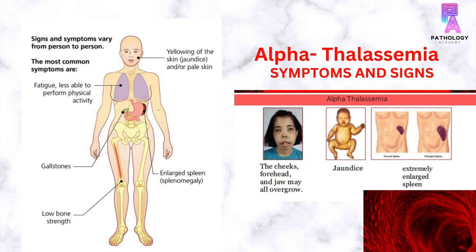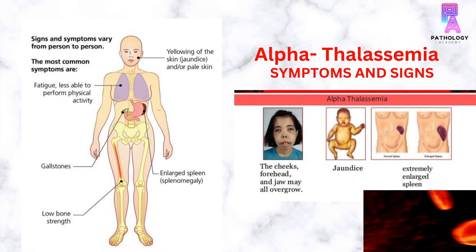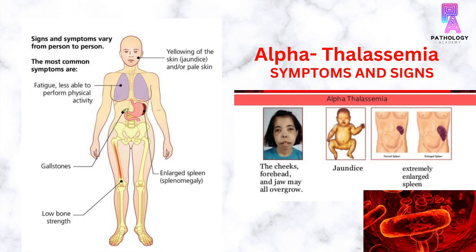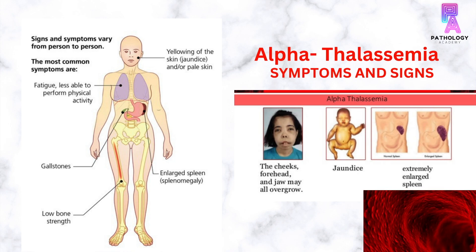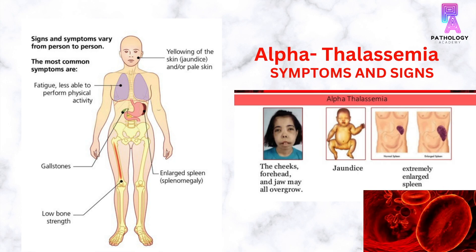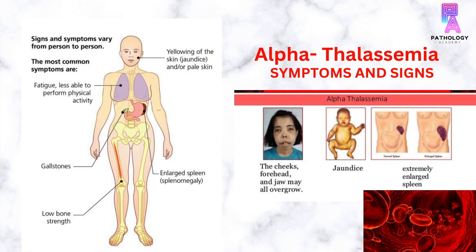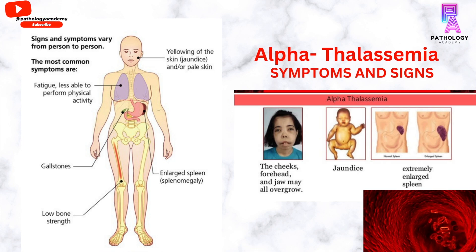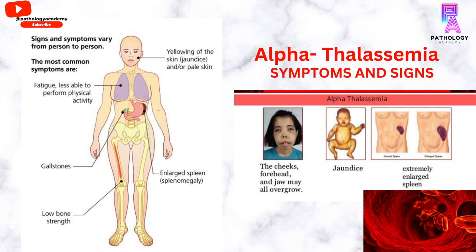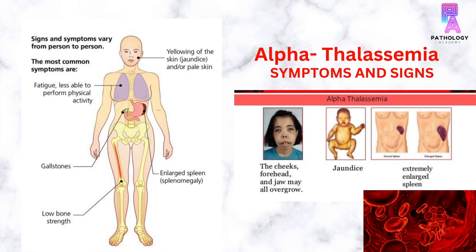Signs and symptoms of alpha thalassemia: patients with alpha thalassemia carrier state or alpha thalassemia trait do not have major symptoms or have only a few symptoms. Patients who have HBH disease or alpha thalassemia major are symptomatic, and these symptoms may vary from person to person. The most common symptoms are fatigue, jaundice, splenomegaly, gallstones, and there is overgrowth of bones of the cheek, forehead, and jaw, giving rise to the typical thalassemia facies.